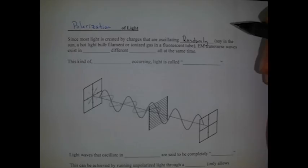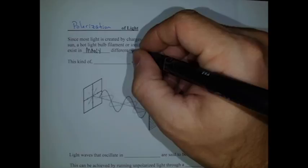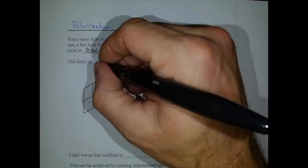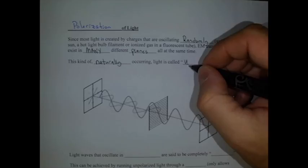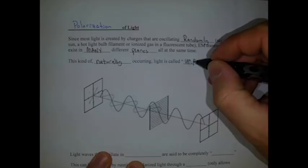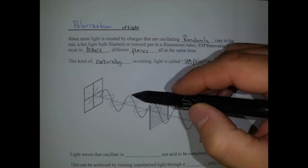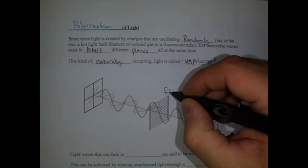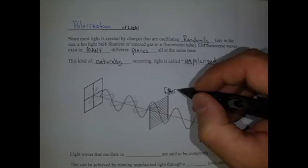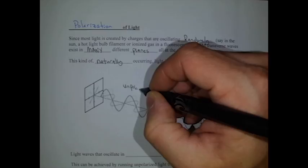And these waves exist in many different planes of oscillation all at the same time. This kind of naturally occurring light is called unpolarized. Most light tends to be unpolarized naturally since it's created by random vibrations. So again, we can kind of represent that by drawing these arrows, showing that the oscillations are in all different directions. We've got all these different waves in all different directions. But if we go through a special device we'll talk about in a moment called a filter, after going through the filter, we can end up with just polarized light. So we have unpolarized here, and polarized here.